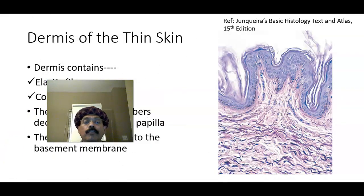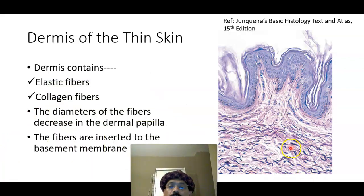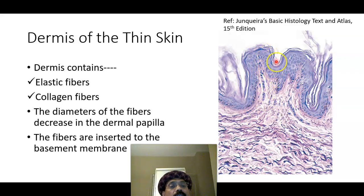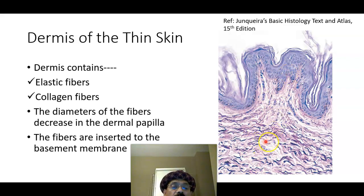In the dermis of the thin skin we find a lot of elastic fibers — the darker fibers are the elastic fibers — and we also get collagen fibers. These fibers become thinner as they pass toward the dermal papilla and are attached to the basement membrane of the stratified squamous epithelium. The darker fibers are the elastic fibers and the lighter ones are the collagen fibers.